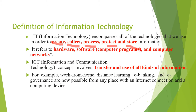A computer always processes the information. When you enter something inside the PC, it processes it and gives an accurate result in the form of output. It also protects the information. Unauthorized access means that without our knowledge a person is gaining information from us. To prevent your data from unauthorized access, we need to protect the computer by giving a password or by installing antivirus software.